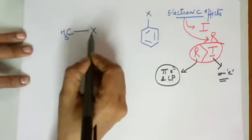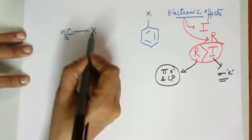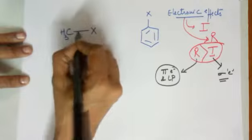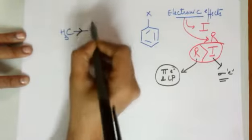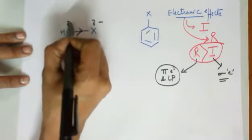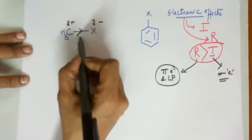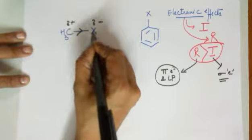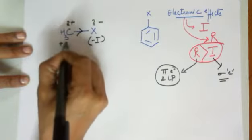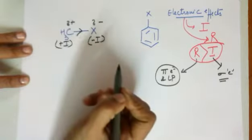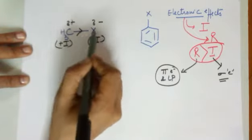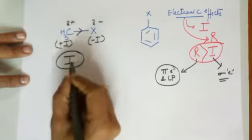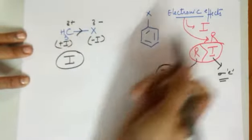In haloalkanes there are no pi bonds and no lone pairs on carbon, so the shared pair of electrons is pulled by the halogen. Halogen gets a delta-negative and carbon gets a delta-positive. This polarity is due to the inductive effect since sigma electrons are involved. We say halogen has a minus-I effect while carbon has a plus-I effect. For alkyl halides we only talk about the inductive effect.